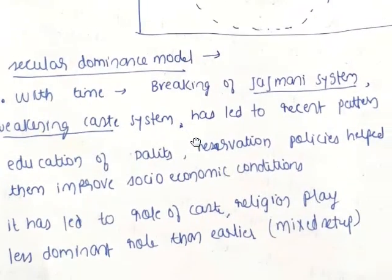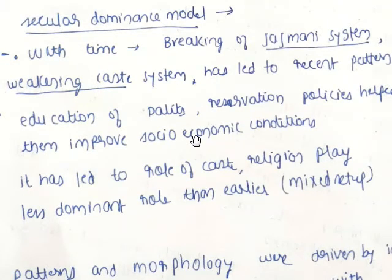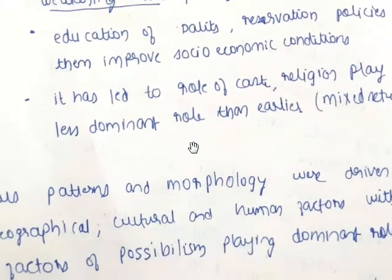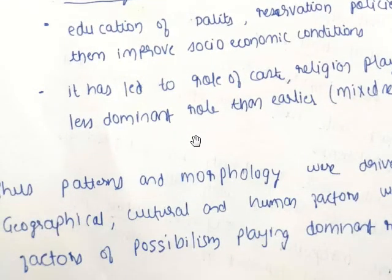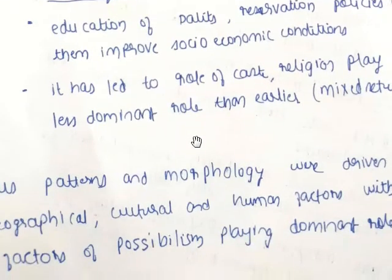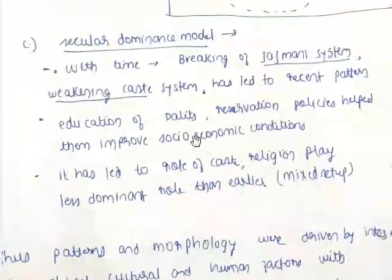With secularism and the breaking of the jajmani system, the rigid caste system has weakened. Education, economic conditions, and reservation policies have helped lower castes improve their situation. Religion and caste now play a less dominant role than earlier in determining settlement patterns and morphology, though they still play a crucial role in human settlement.